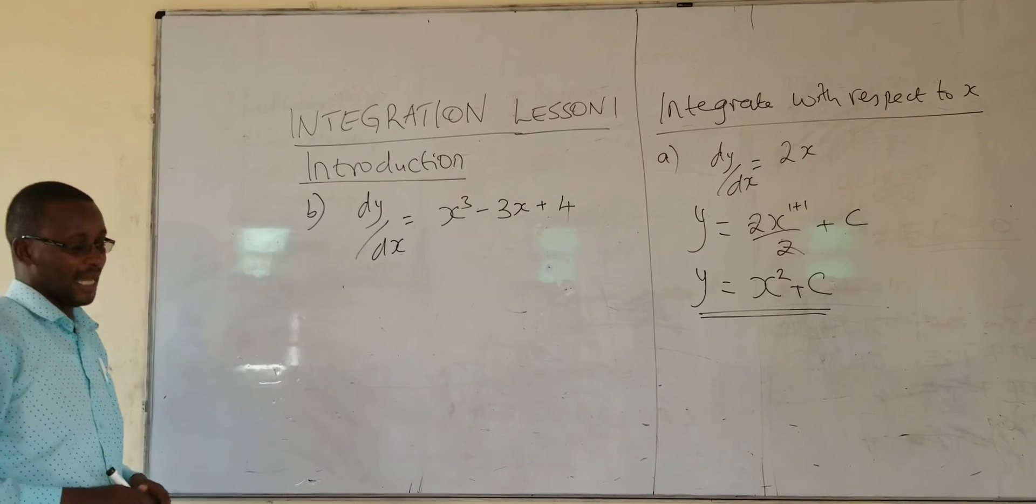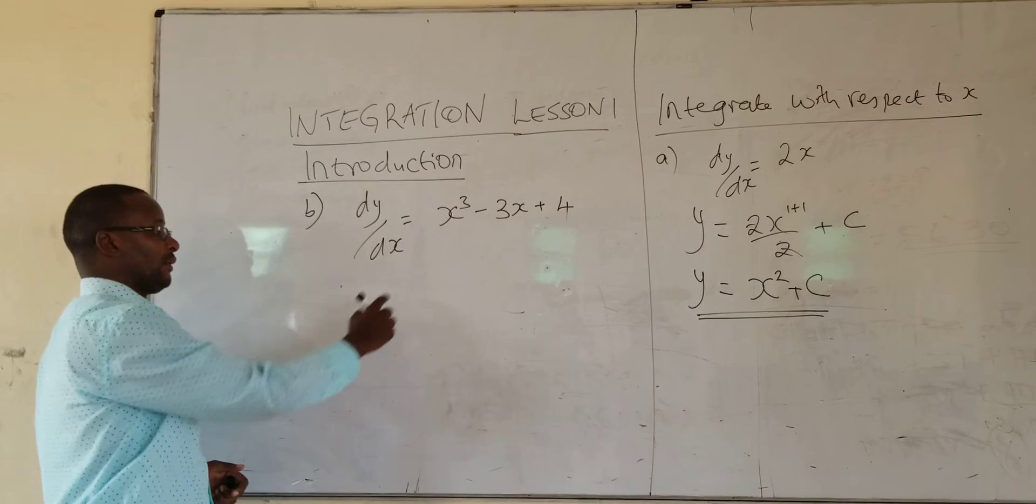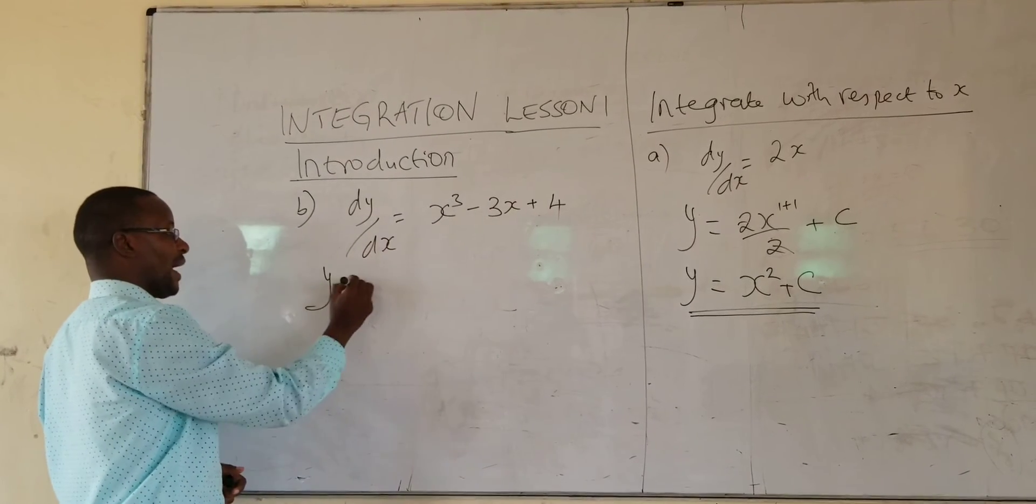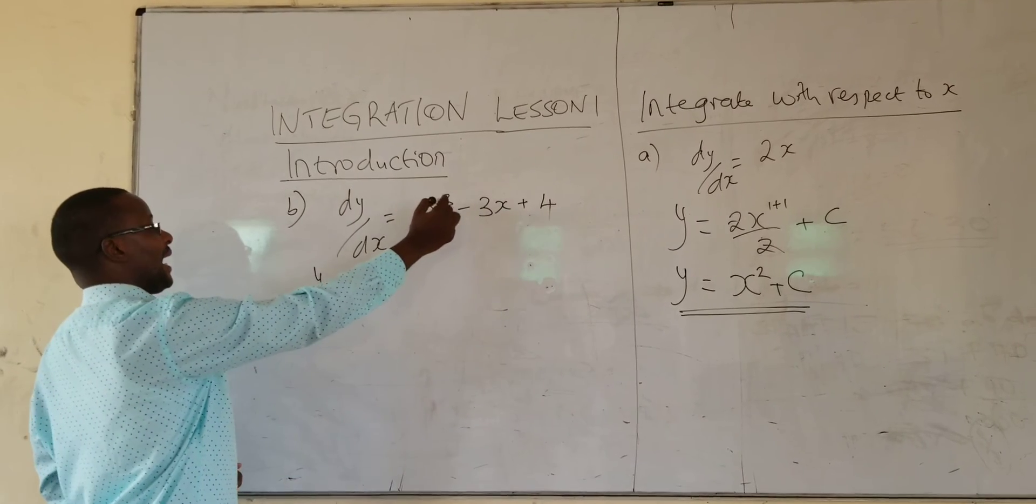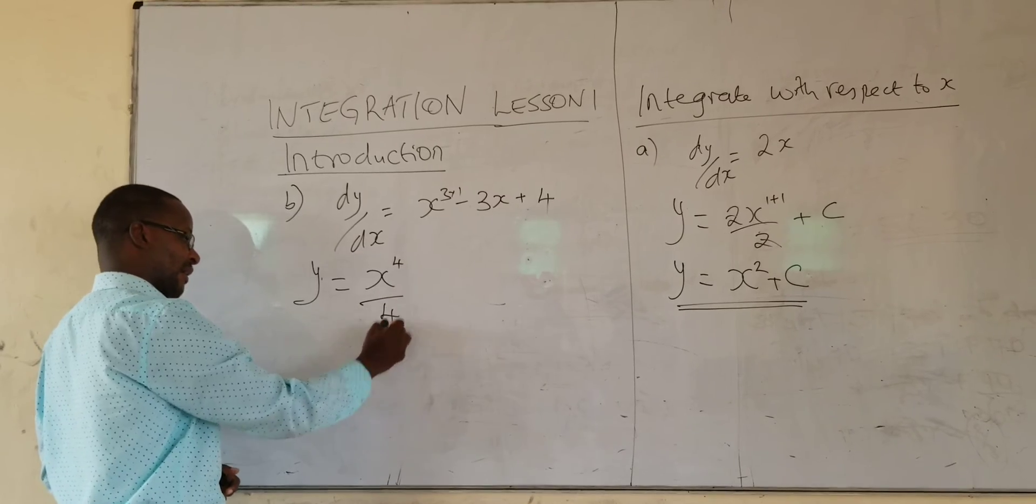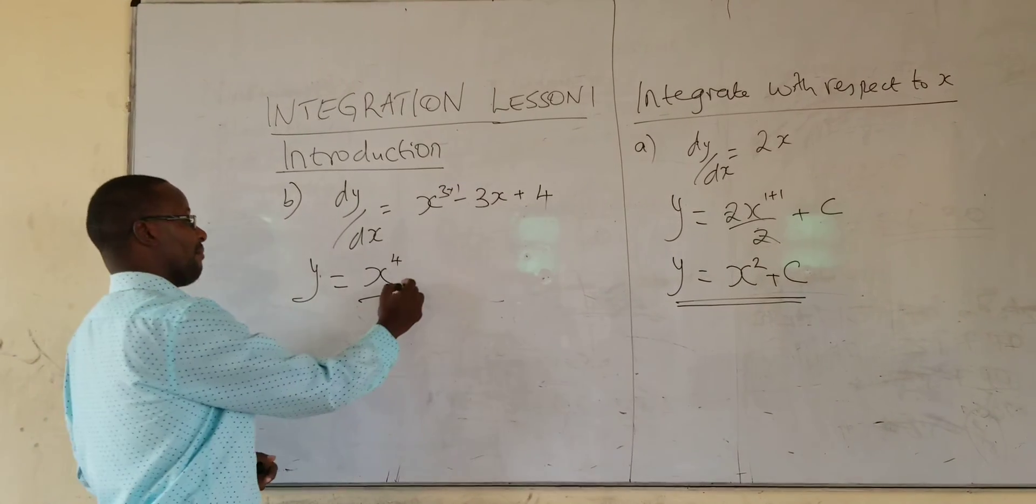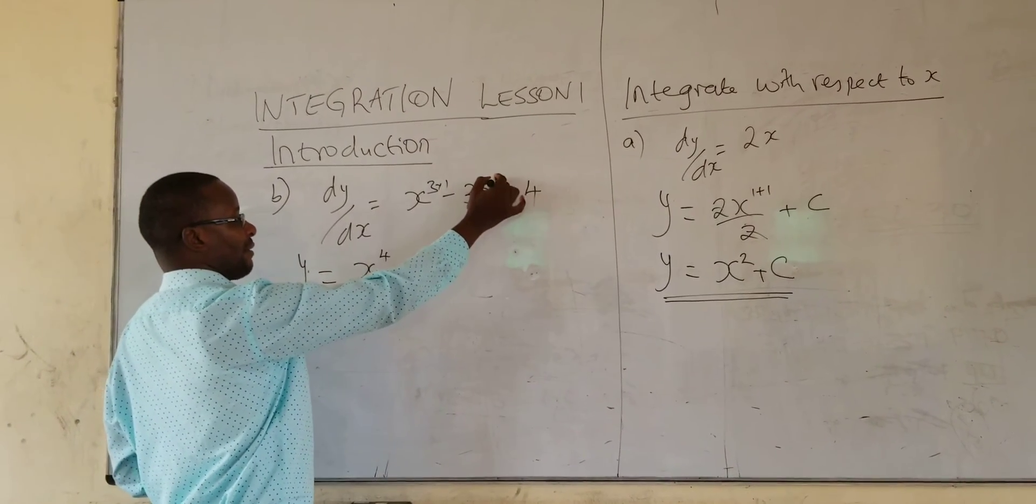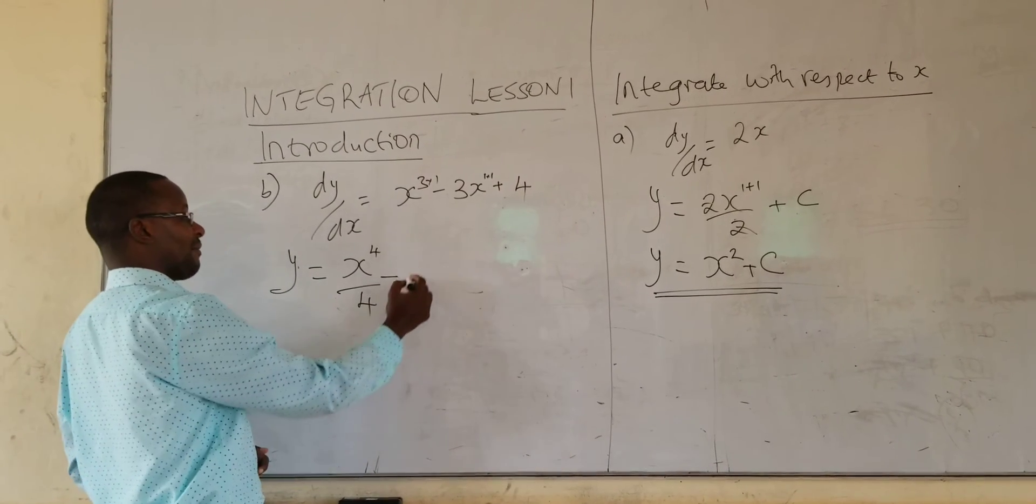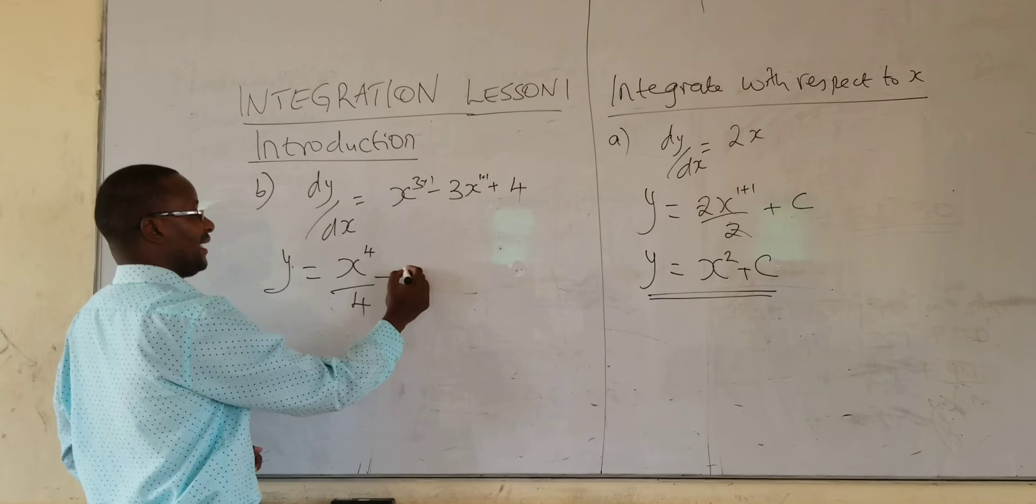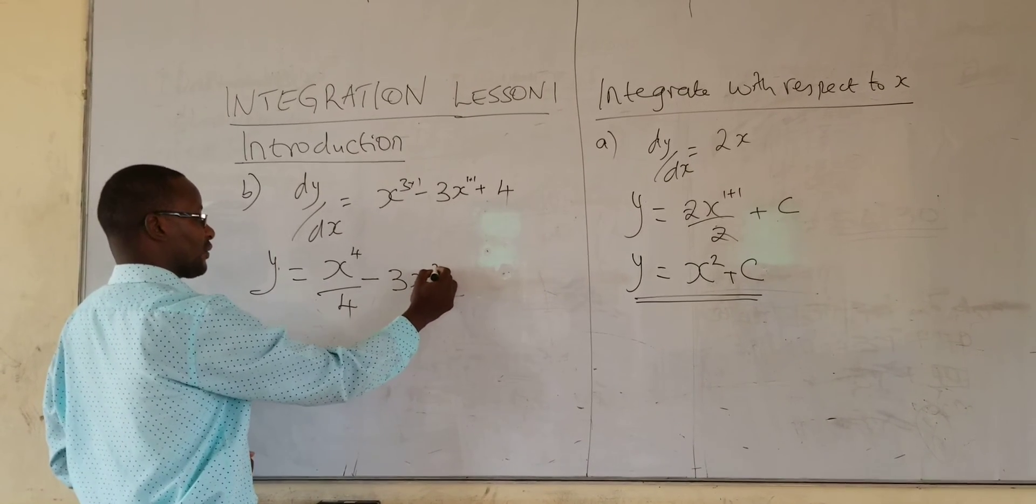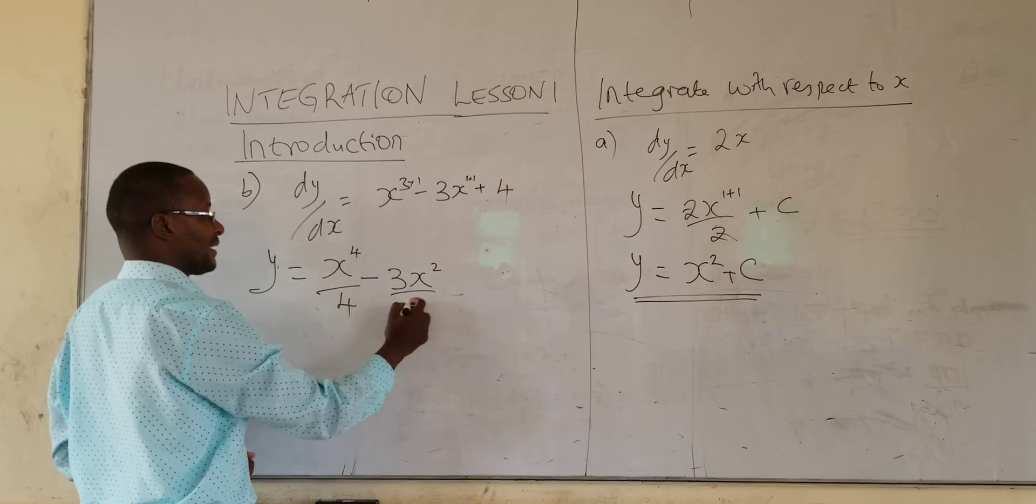When you integrate that, we are going to integrate each at a time. So you get y is equals to, I add 1 here to the power. So I get x power 4 and I divide by 4. Minus, this x is already power 1. So I add 1. So I add 1 and I'm going to get 3x squared and I divide by the same power.